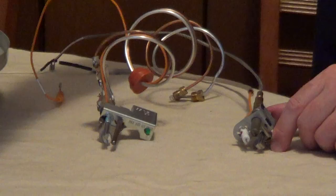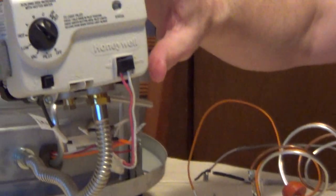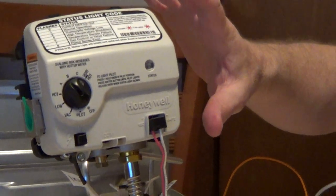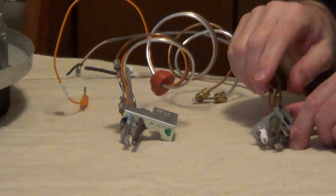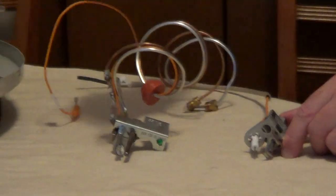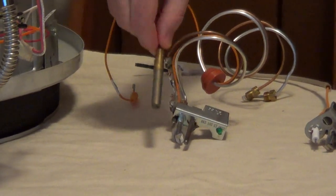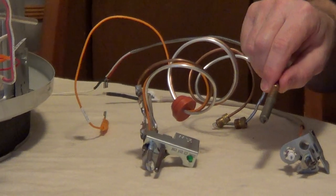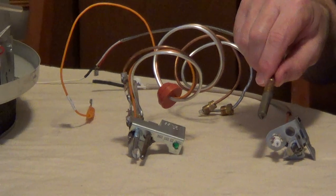Now, if you have any of the water heaters after 2010 that have an electronic gas control and it's self-diagnosing, they're going to be using a thermopile. You can see that this is much larger than the thermocouple, and this thermopile is going to generate about 750 millivolts.